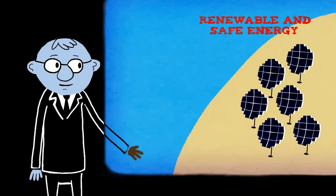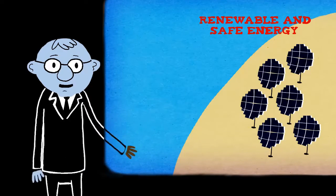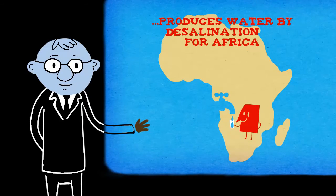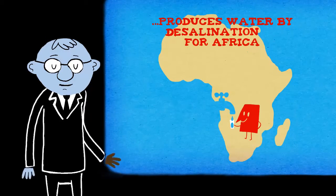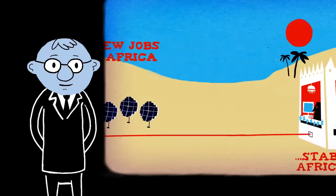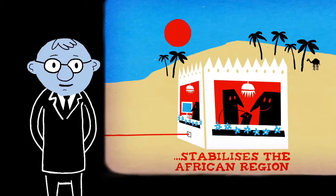Desert Tech solves four key problems. It produces renewable and safe energy. It produces water by desalination for Africa. It produces hundreds of thousands of new jobs as well in Europe as in Africa. And it has peacekeeping incentives because it stabilizes the African region.